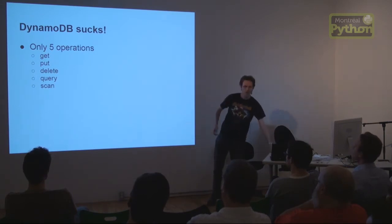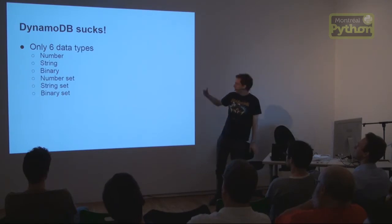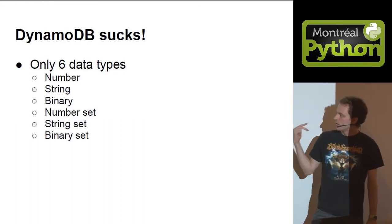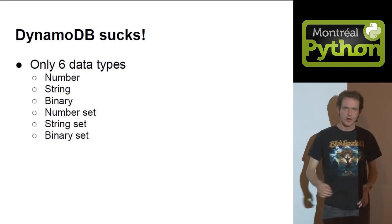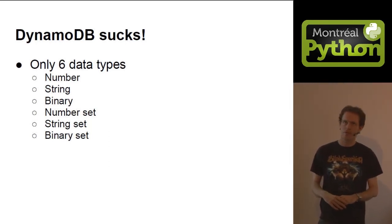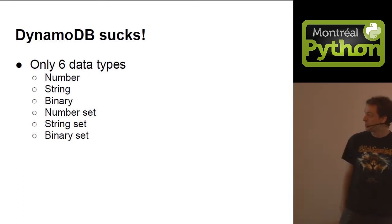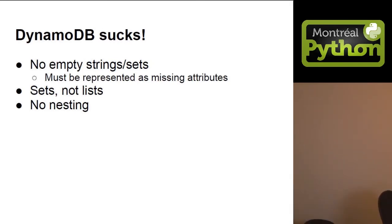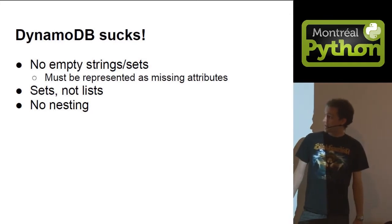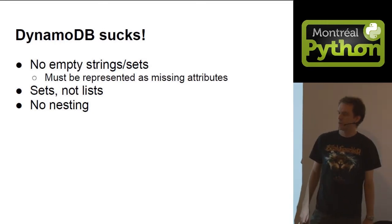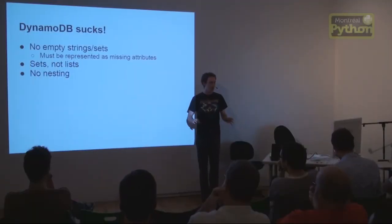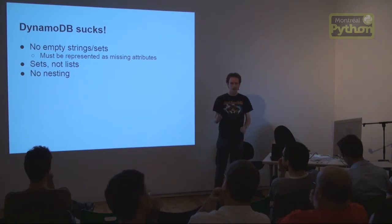There are exactly six data types: number, string, binary, number set, string set, and binary set. Numbers can be ints or floats. Importantly, those are sets, not lists — no ordering and unique elements only. Strings and sets must be non-empty; if you want an empty string or empty set, you have to represent them as missing attributes. And there is no nesting whatsoever — sets contain only numbers or strings, not sets of sets.